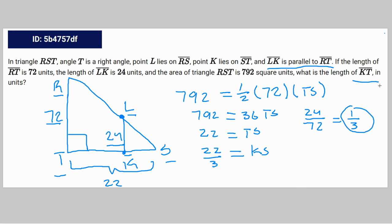To find TK, which is what we're looking for (KT is the same thing as TK by the way), it's going to be TS minus KS, which equals 44 over 3.